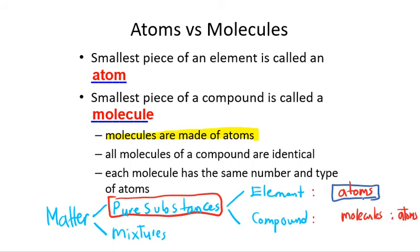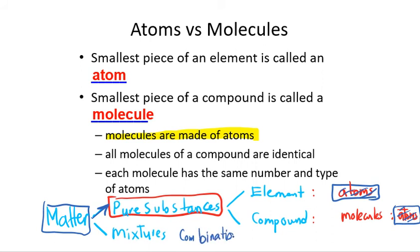Whenever we start with a pure substance, it doesn't matter what type — at the end we have atoms. Whenever we talk about elements, we talk about only atoms. Whenever we talk about compounds, we talk about molecules, and molecules are made of atoms. So everything for matter ends to atoms. Mixtures are combinations of pure substances, and pure substances also end to atoms, so everything ends to atoms.